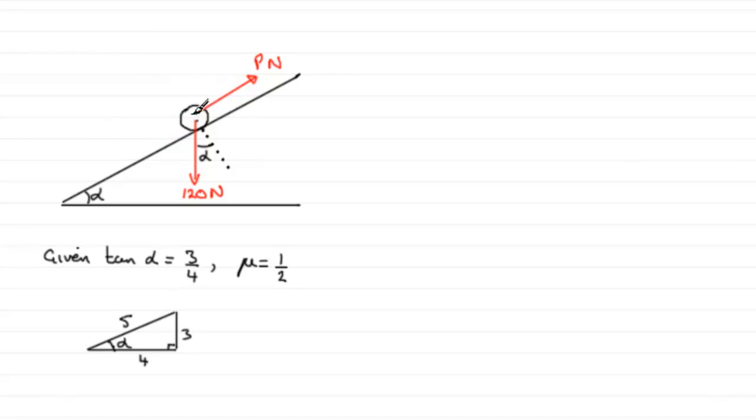Now what other forces have we got acting on this particle? We've got the contact force, the normal reaction, R Newtons. Now you've got to be careful here, this is not the same contact force that we had in the first part. That's because we had a force P pushing into the plane and that would add to that contact force. So this is a new value for R.